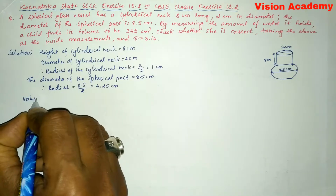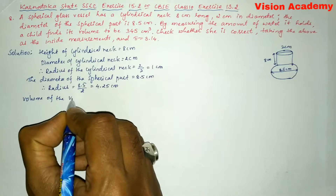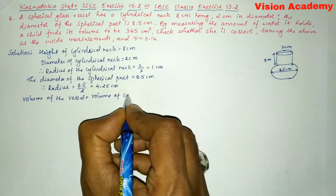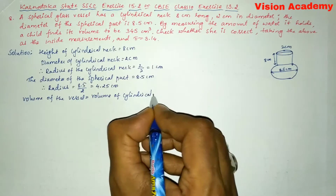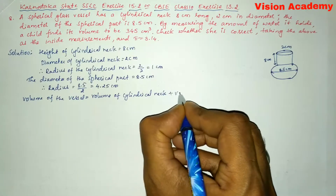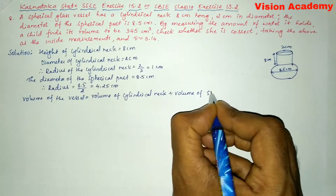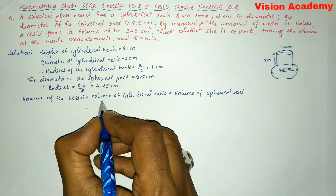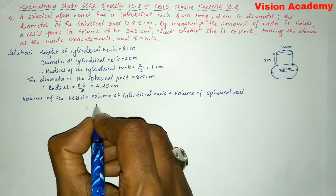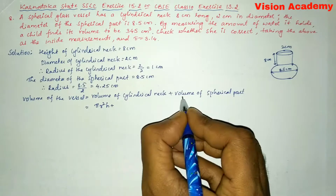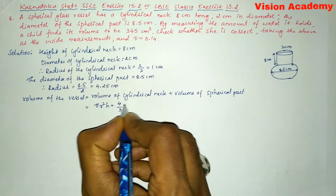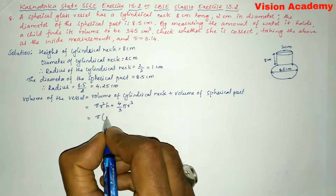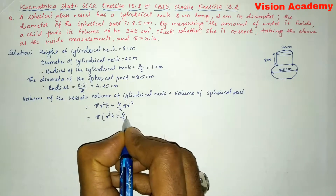Now we will write: volume of the vessel is equal to volume of the cylindrical neck plus volume of the spherical part. Volume of the cylindrical neck is determined by the formula pi r² h, plus volume of the spherical part determined by (4/3) pi r³. Taking pi as common, we get pi times (r²h + (4/3)r³).